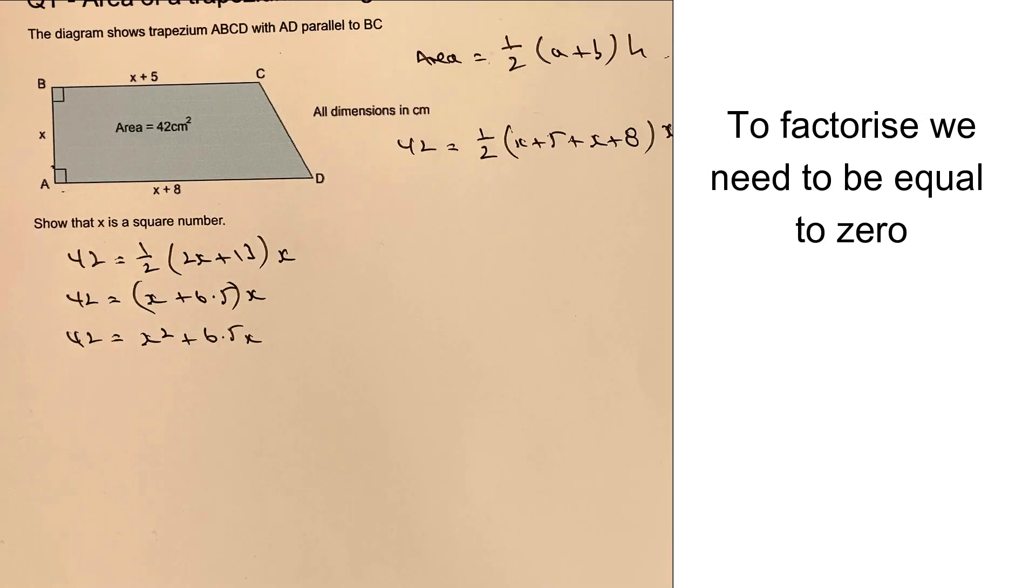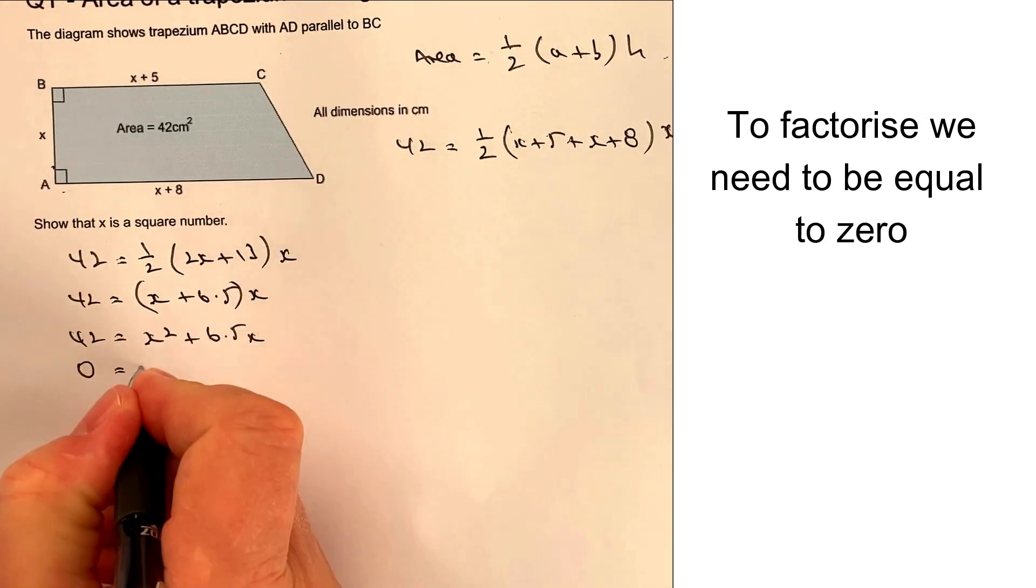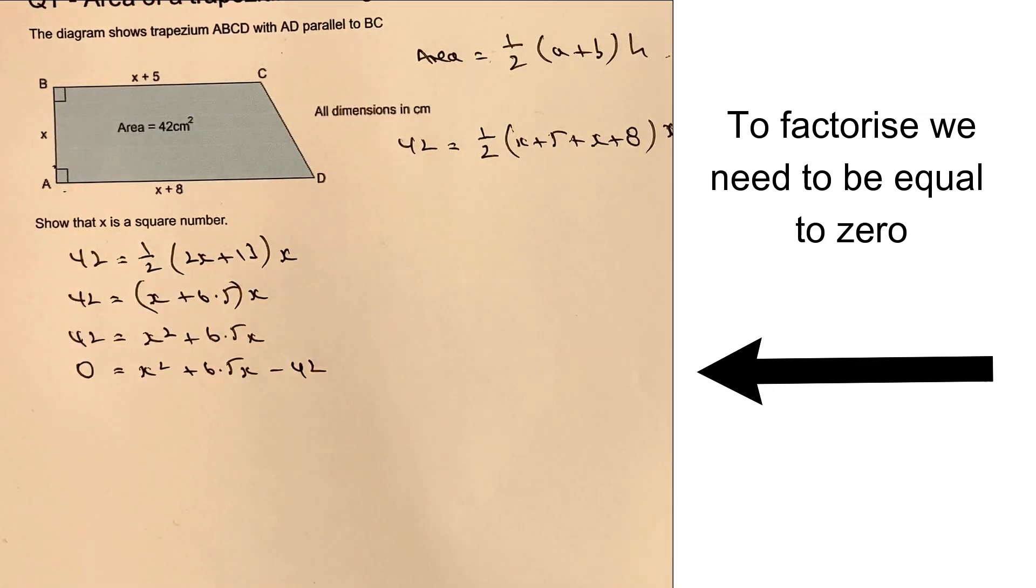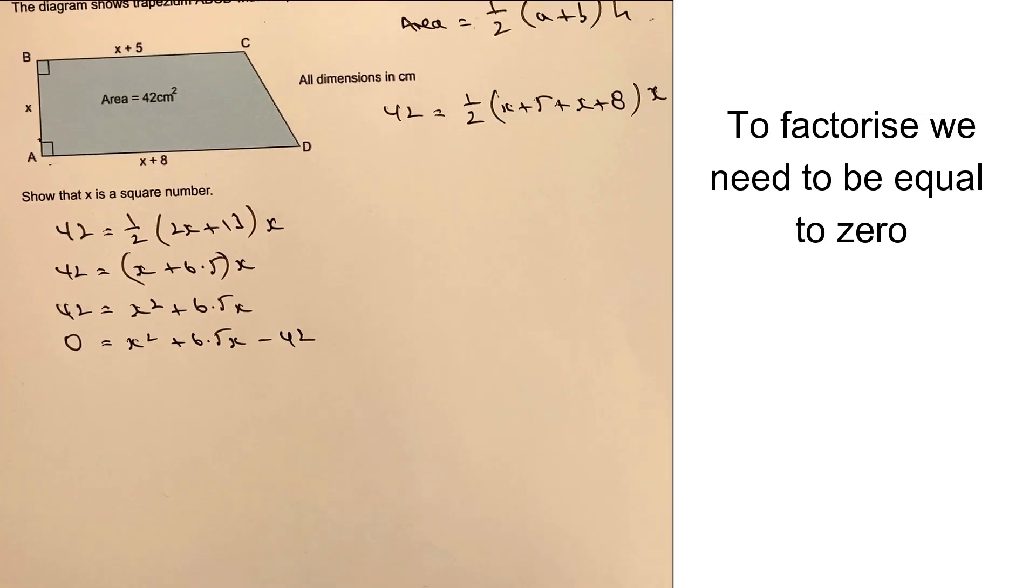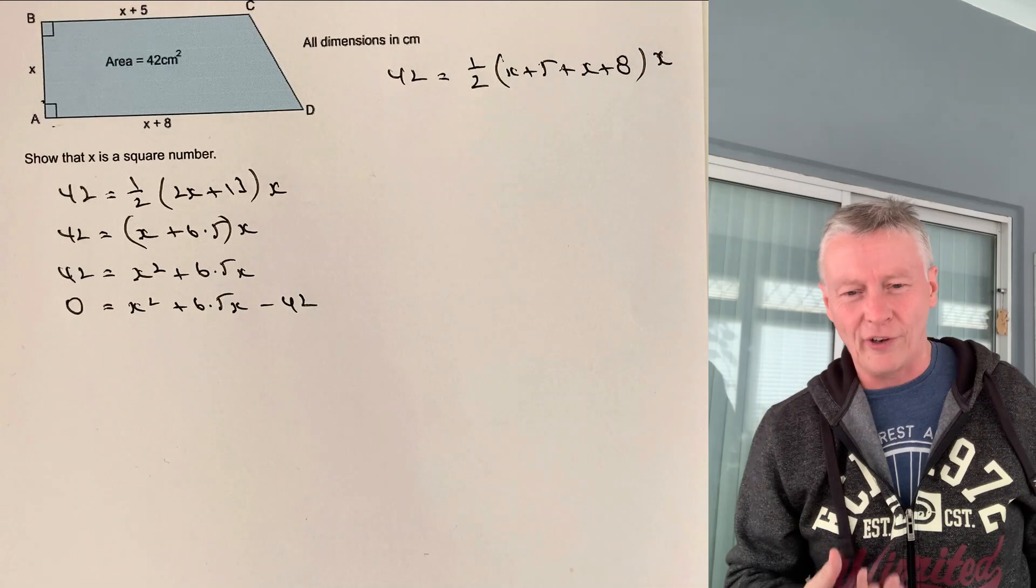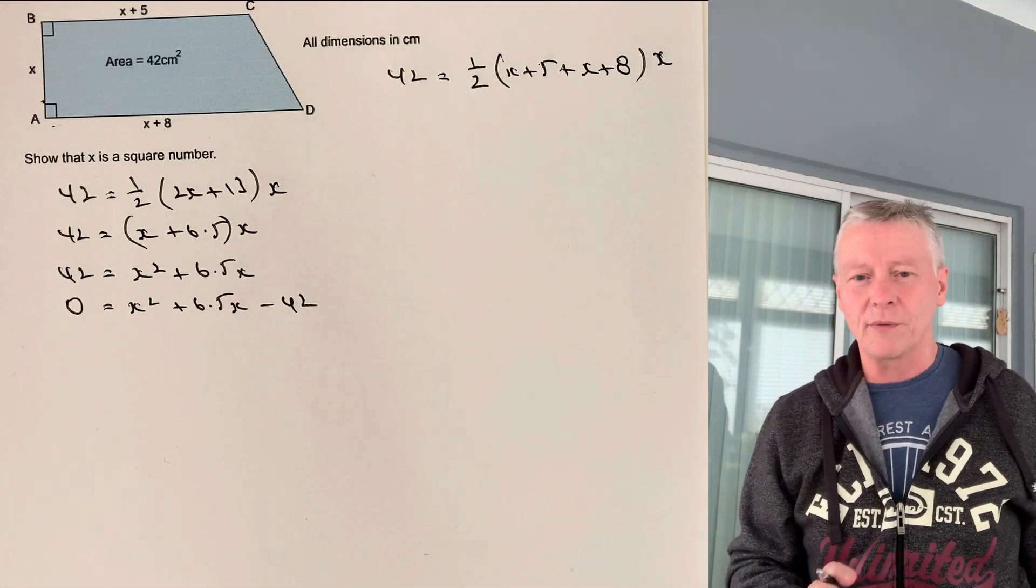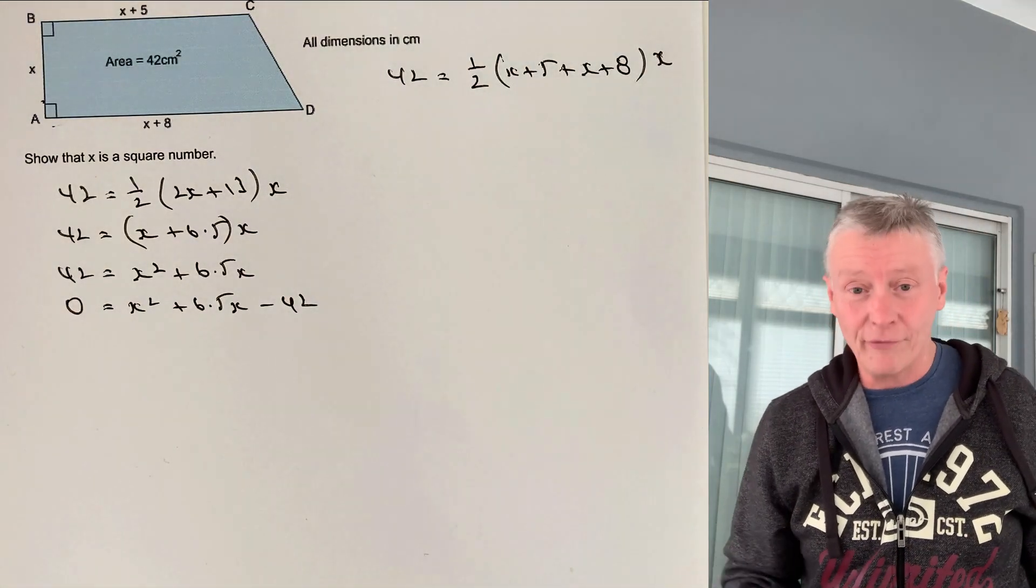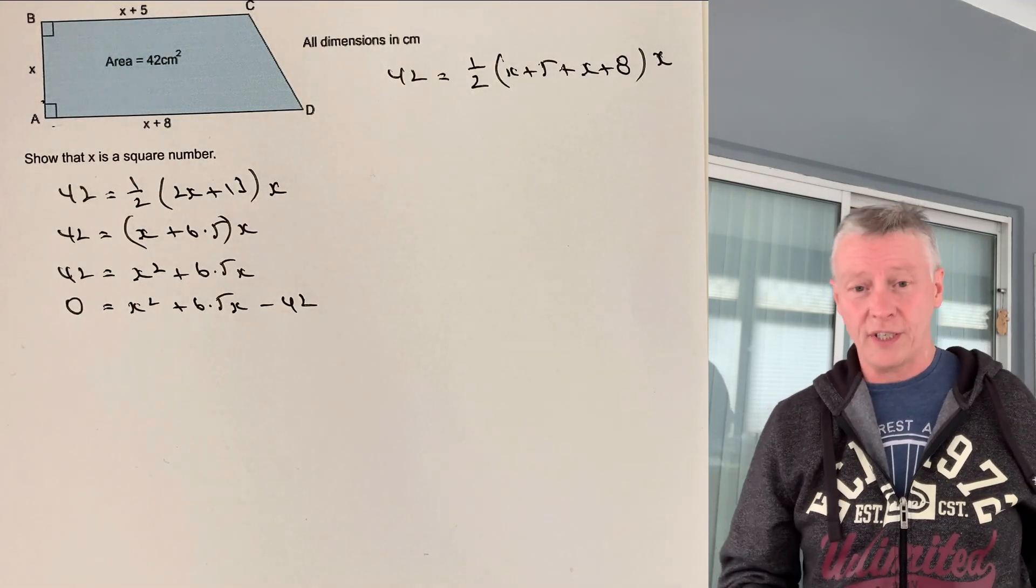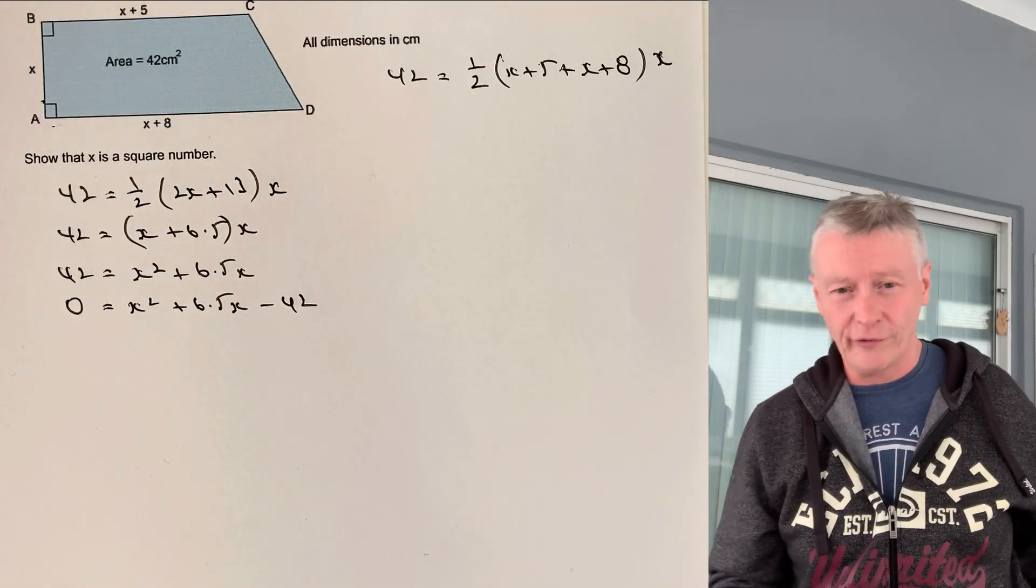Okay, so that's going to give us then 0 equals x squared plus 6.5x minus 42. I'll just move this up ever so slightly. Okay. Now, the problem I've got here is I've got this 6.5x. Well, that's no good to me. So what I'm going to do is I'm going to double everything. And if I double everything, I'm going to get whole numbers, which means I can use the quadratic formula more effectively.